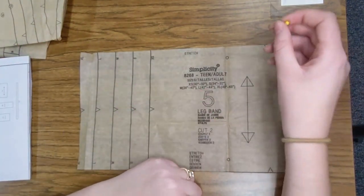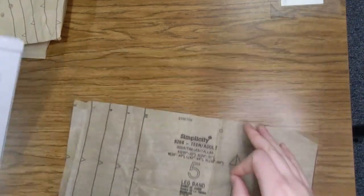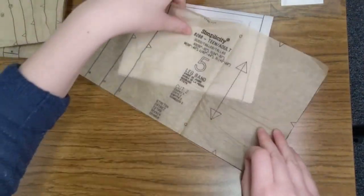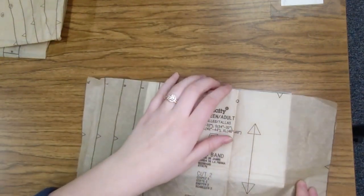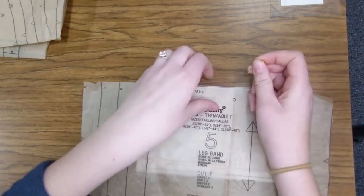So what I would do is I would lay this on my fabric. So pretend this is my fabric right here. And I would lay it on my fabric. I'm going to do it on this other side. This is my fabric. I'm going to take my pin here.